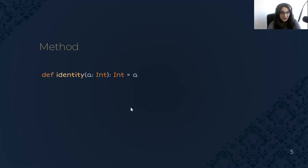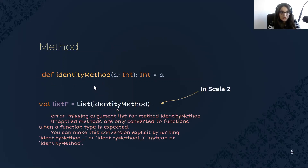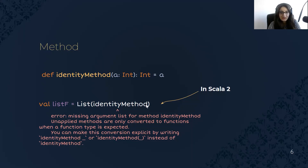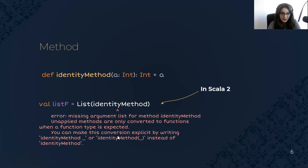Functions are different from methods. This is how we define methods with def, and we cannot use them as values. For example, when we want to create a list of the identity method, in Scala 2 we are going to get an error and it asks us to convert this method to a function to make this possible.